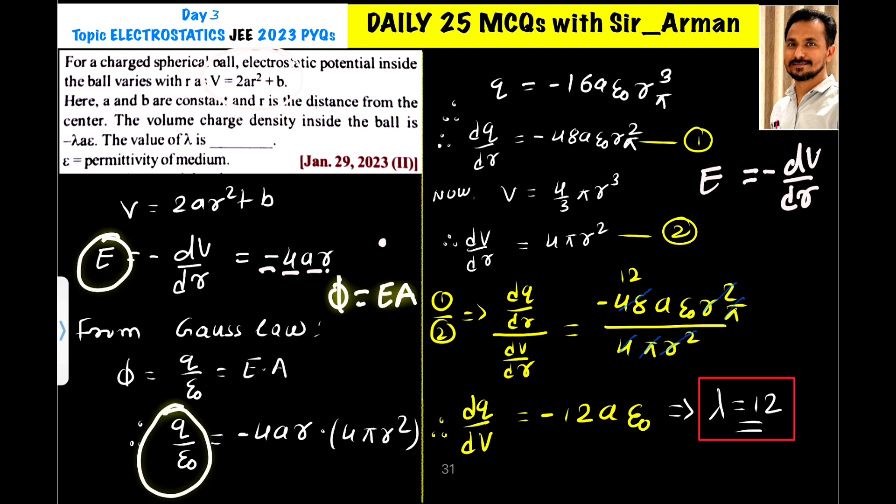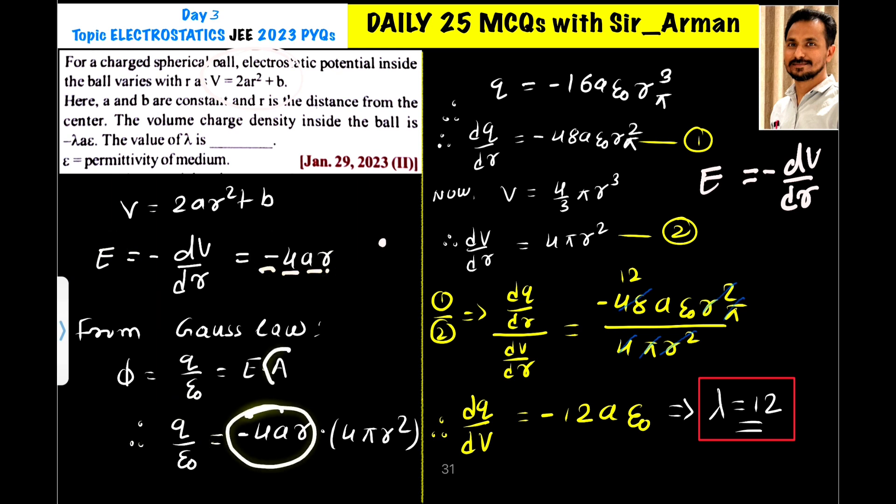Now, instead of E, we can write this part minus 4AR. So minus 4AR and the area of that sphere is 4πR². Area of this sphere is 4πR².